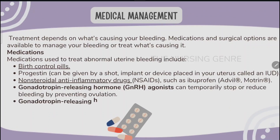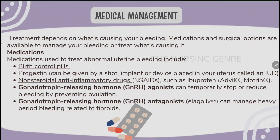Medical management of abnormal uterine bleeding: treatment depends on what is causing your bleeding. Medications and surgical options are available to manage your bleeding or treat the underlying cause. Medical management to treat abnormal uterine bleeding includes birth control pills as the first option.